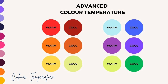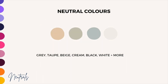After we spoke about basic colour temperature, we discussed how all colours can be cool or warm depending on how much yellow, blue, or red is in them. For example, you can have a cool red that has a little bit of blue in it. Then we spoke about neutral colours, and discussed that some of the more common neutral colours are black and white, beige, taupe, creams and those kinds of colours.